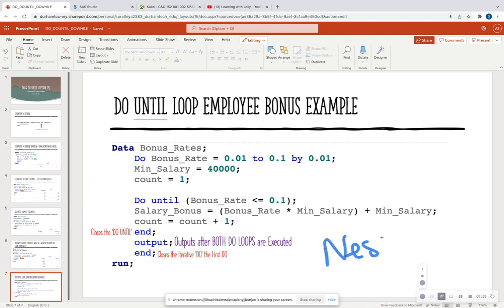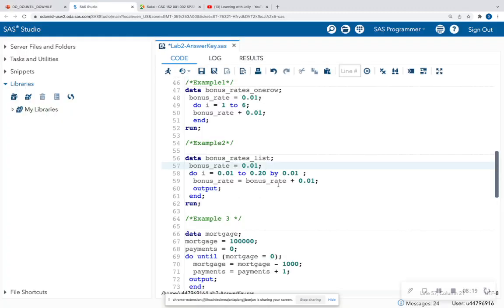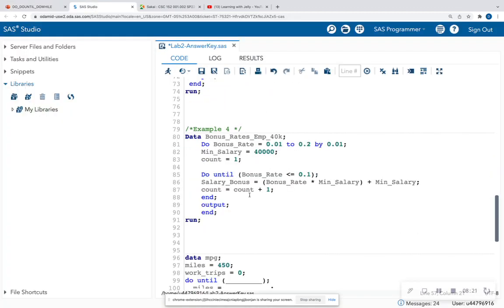So this is what we call nested do loops. And I highly recommend that you practice these, where we can put the regular do iterative loop that we just saw as our first example with a do until or a do while. And then we can output both of those loops. So let's see how this actually looks in SAS. I have it written out in SAS Studio. That is example four.